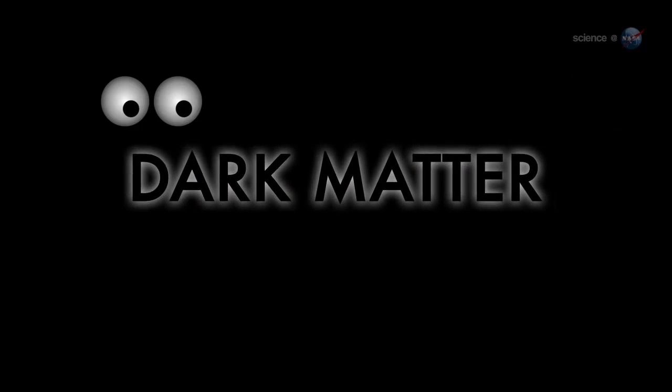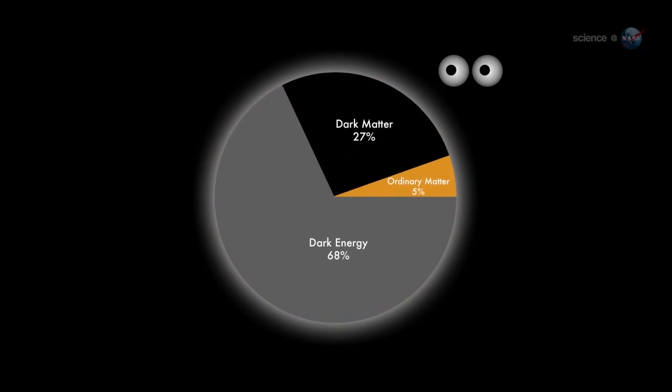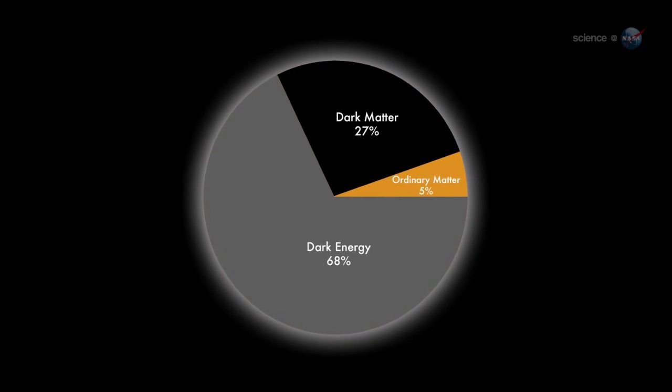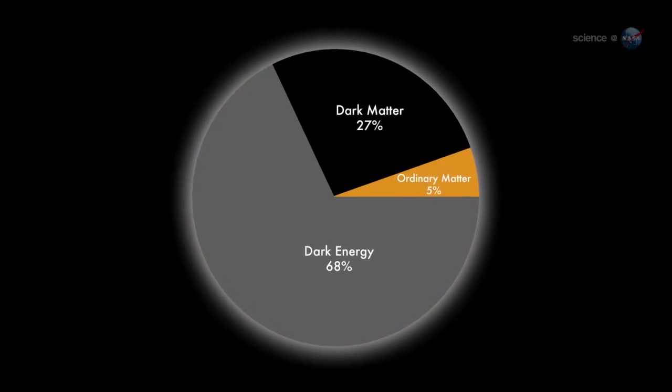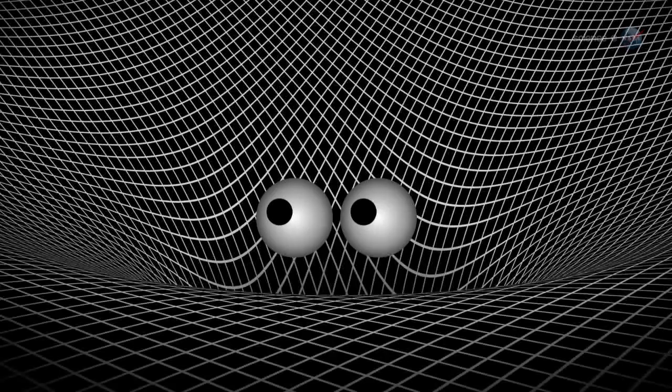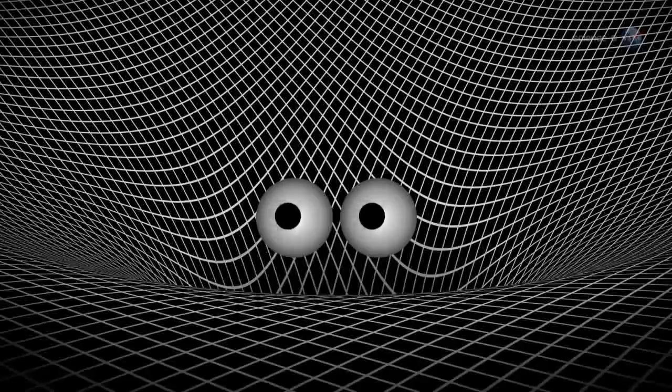One idea is dark matter. Astronomers know that the vast majority of the material Universe is actually made of dark matter rather than ordinary matter. They just don't know what dark matter is. It exerts gravity, but emits no light, which makes it devilishly difficult to study.